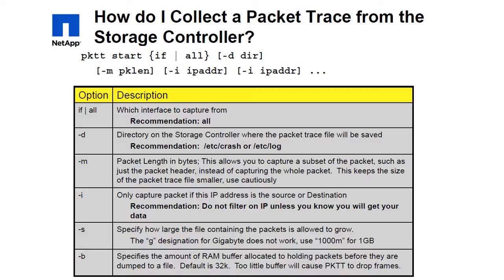After the maximum size has been reached, packets continue to be logged to the buffer but not to the disk. The -b option sets the buffer size, which may be specified as a number with an optional trailing K or M multiplier. The default is 32 K.